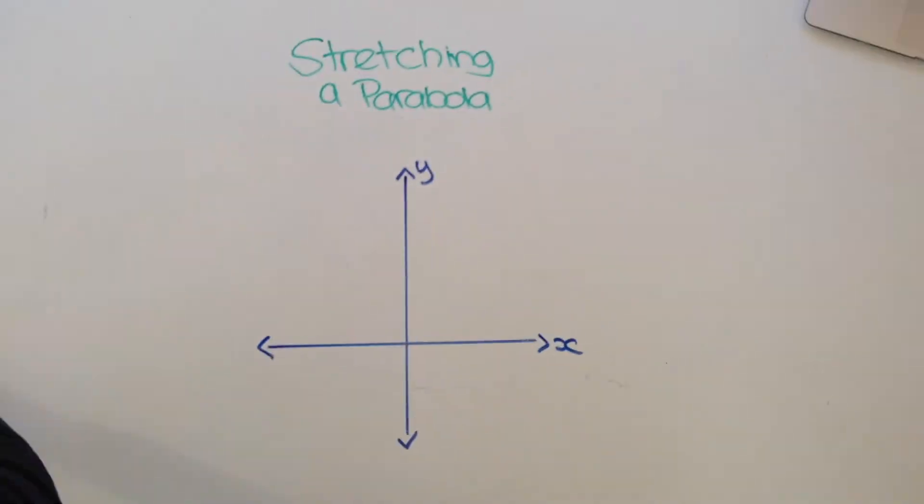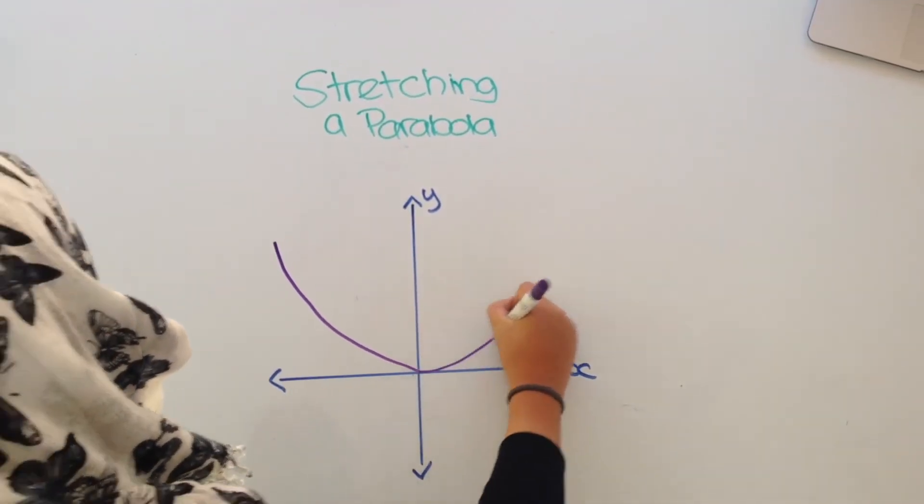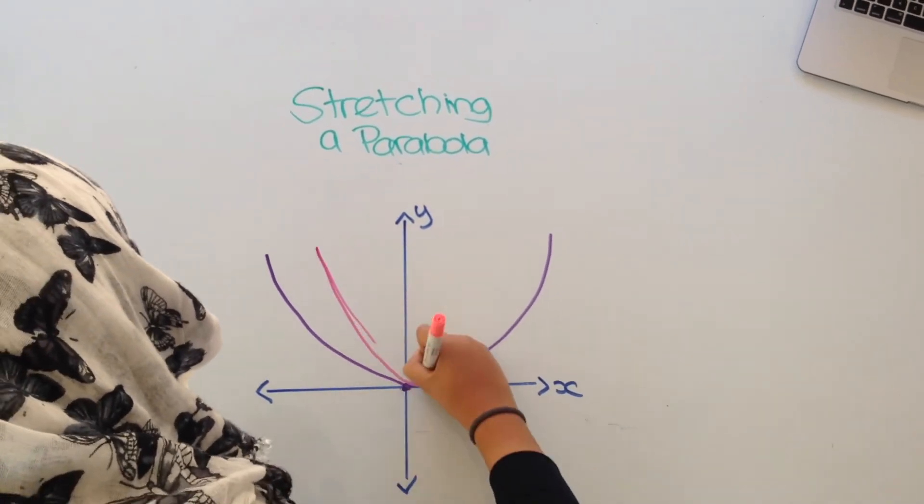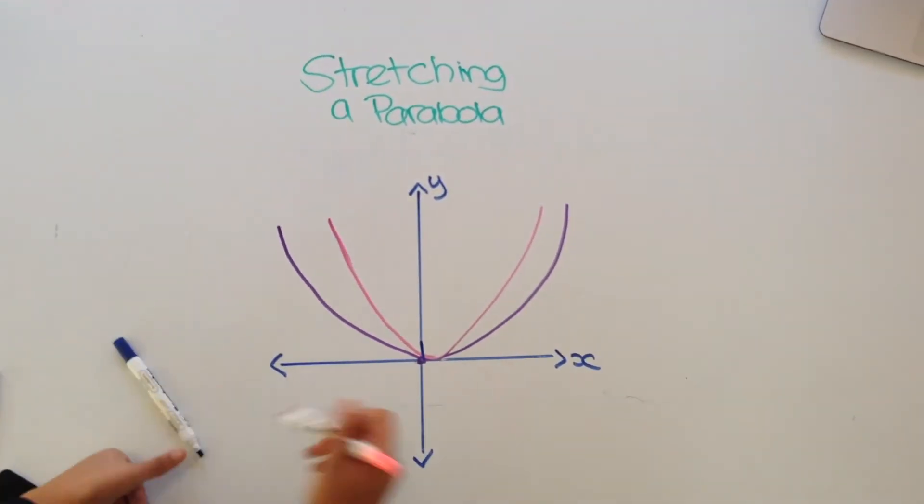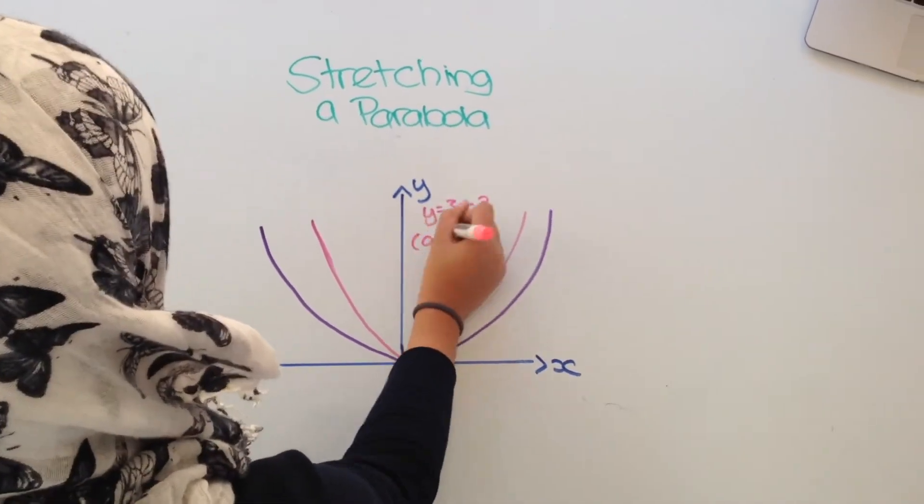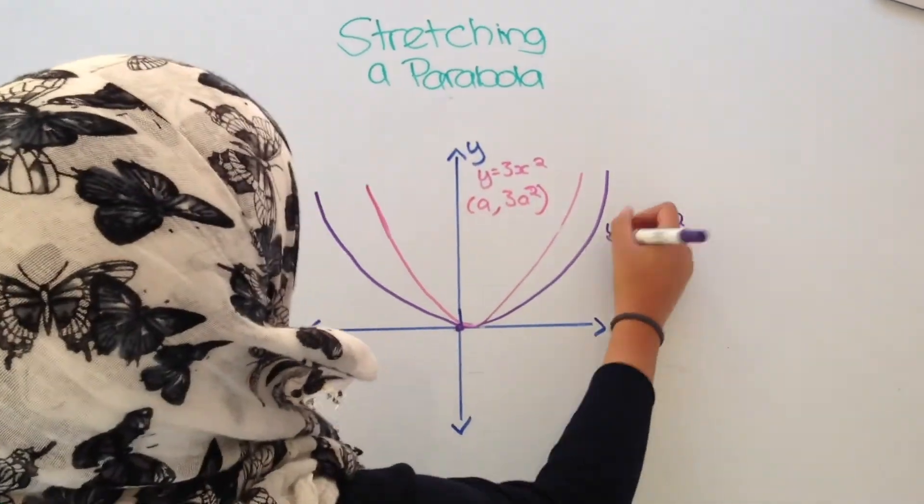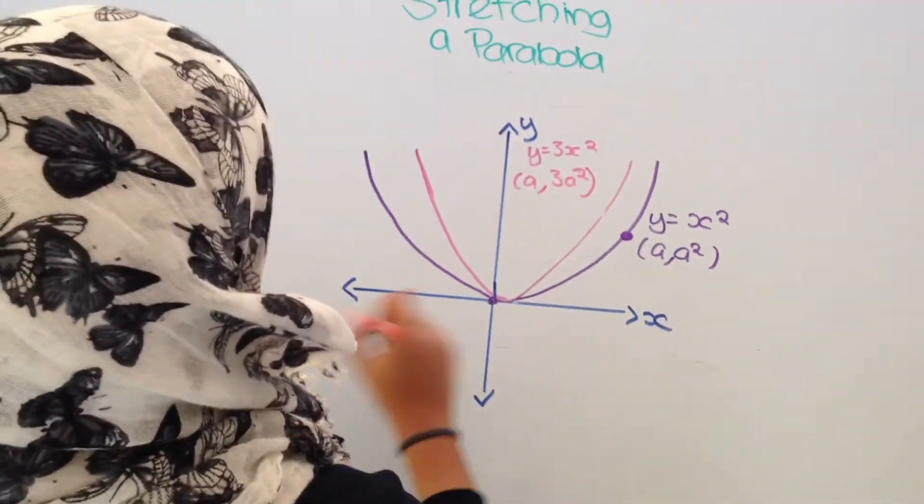Not all parabolas are congruent to each other. For example, the arms of the parabola y equals 3x squared are deeper than those of the original parabola. The y value of each point on this parabola is three times the y value of the point on the basic parabola with the same x value. As you can see in the following diagram, the graph has been stretched in the y direction by a factor of three.